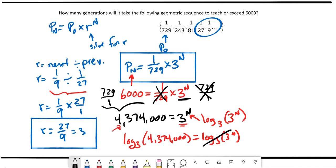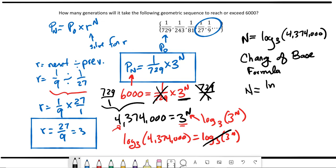Now, the right-hand side we know is going to cancel and leave us with just n. But we still have to evaluate the other side of the equation. And to do this, we use something called the change of base formula. So n is equal to ln of 4,374,000 divided by ln of 3.